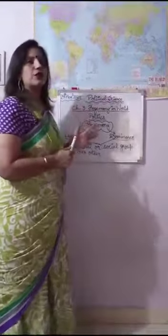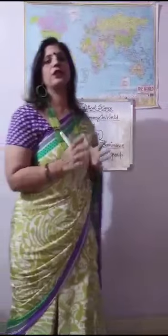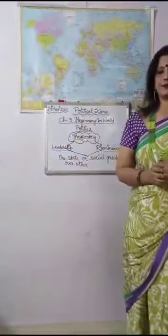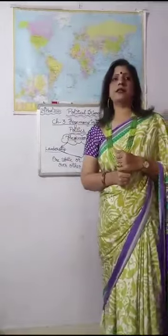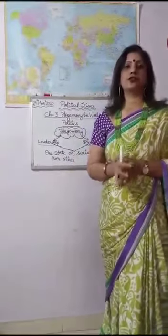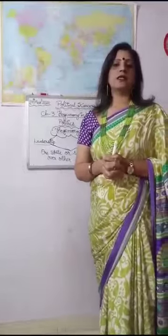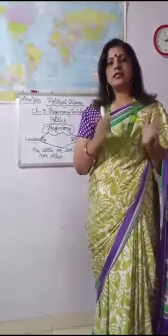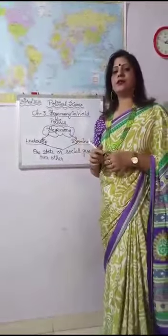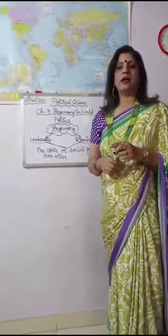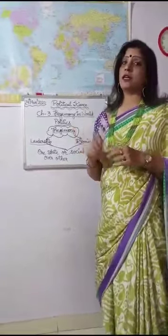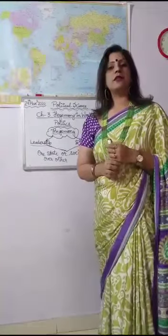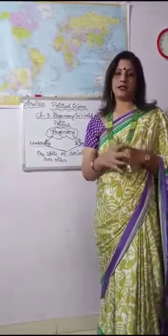Our first topic of this chapter is the beginning of the new world order by the US. We have already studied in the previous chapter the disintegration of USSR which took place in 1991. The disintegration of USSR led to the beginning of US hegemony in 1991, and America remained with all its powers enhanced and intact.